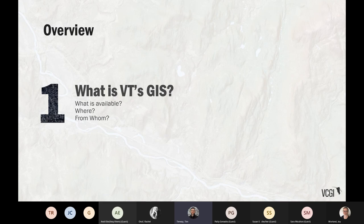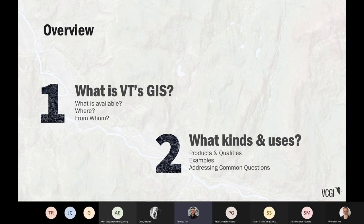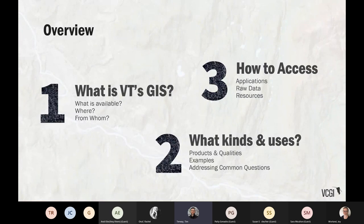We'll start at the basics: what is Vermont's GIS, where does it come from, what's available, and who are the parties that contribute to it? The second half of this talk will focus on the kinds of information available, some example uses, differences in the kinds of products we publish and maintain, and some of the common questions both that we see and that you might see in your roles as librarians. We'll end with examples of how to access different kinds of information, mostly focused on applications, and then examples of raw data usage and where to find all the resources shared today.